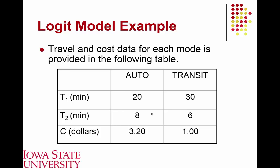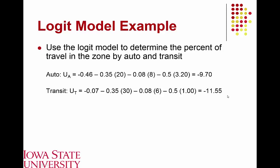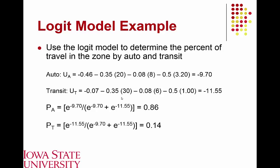As an example with given in-vehicle travel times, excess times, and costs for auto and transit: plugging in a 20-minute travel time, 8-minute excess time, and $3.20 cost gives a utility value of -9.7 for auto. For transit, the longer travel times are the major determining factor, resulting in a significantly lower utility value. Even though people with all things equal tend to prefer transit, they're not willing to accept the larger penalty for increased travel time. The result is 86% of travelers using automobile and 14% using transit.